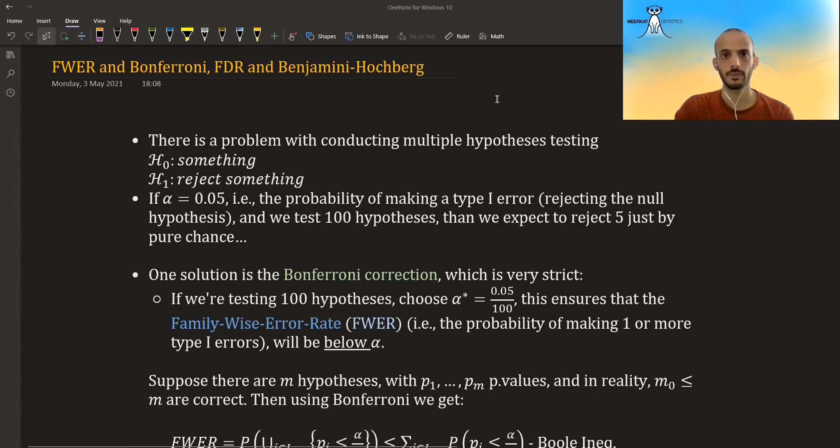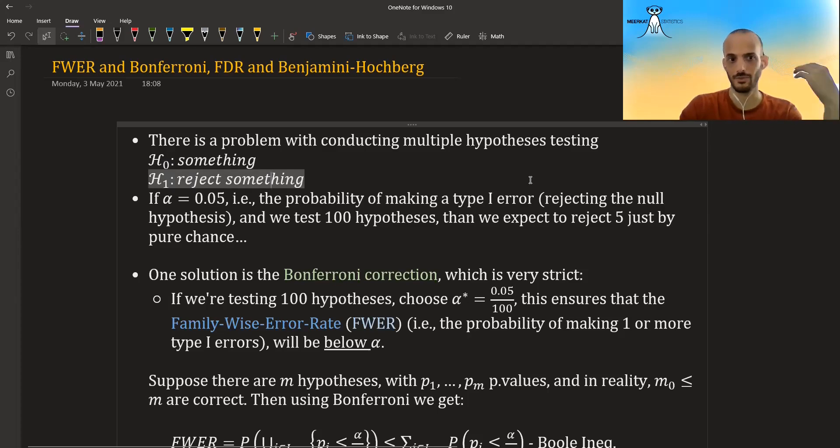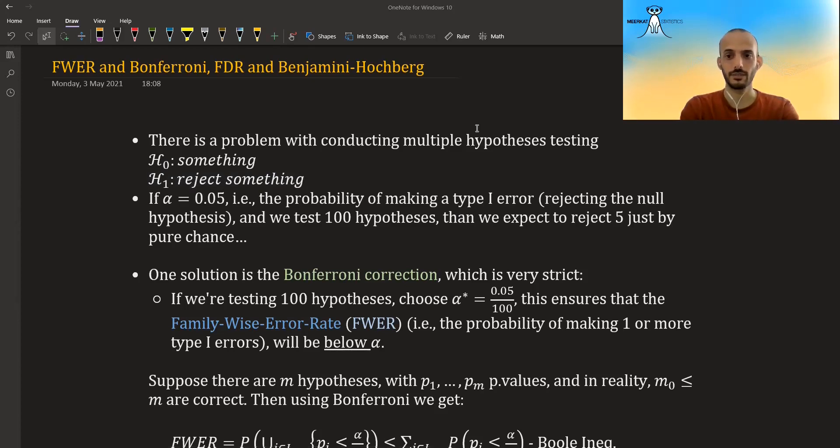So what is the problem? The problem is when you want to conduct multiple hypothesis testing. Let's say you have some hypothesis that says something and you're considering rejecting that something. With an alpha of 0.05, which is the probability of making a type 1 error—rejecting the null hypothesis when actually the null hypothesis is correct—then if we test 100 hypotheses, we expect just by the definition of alpha that we reject five of those by pure chance.